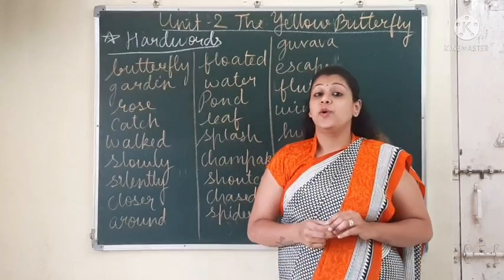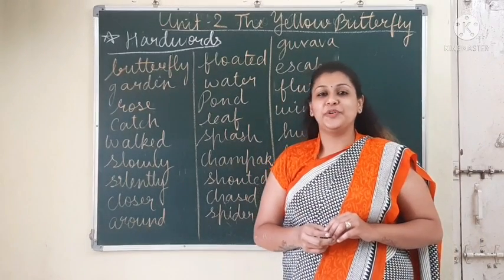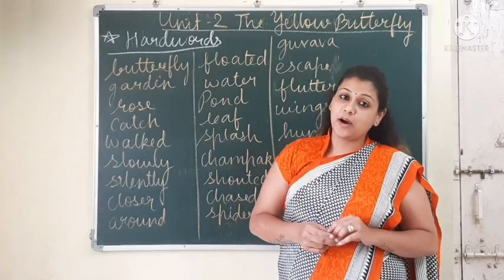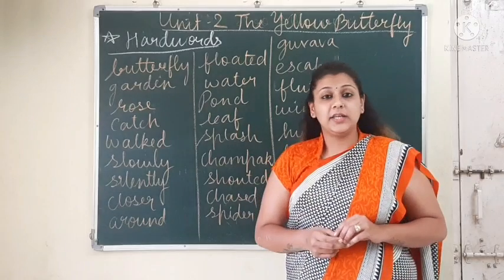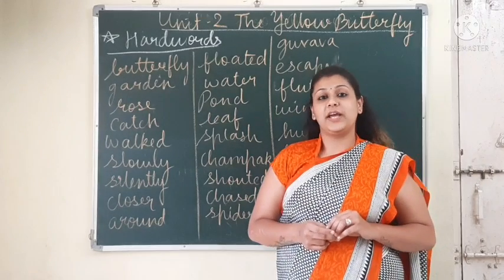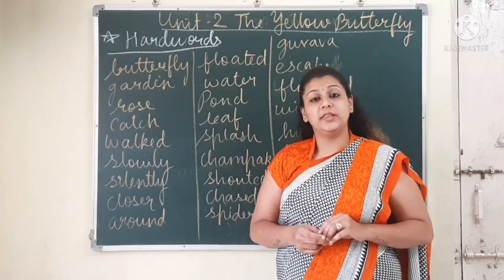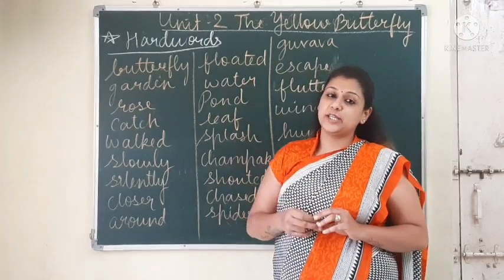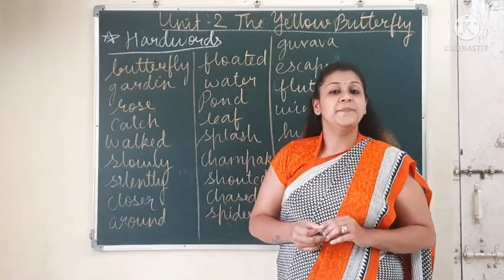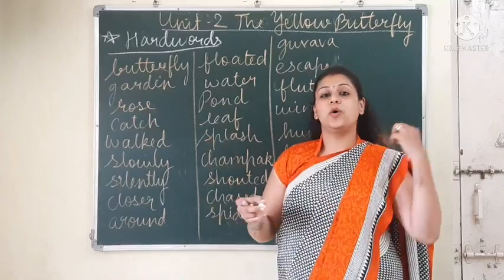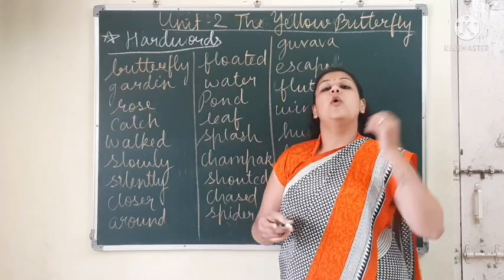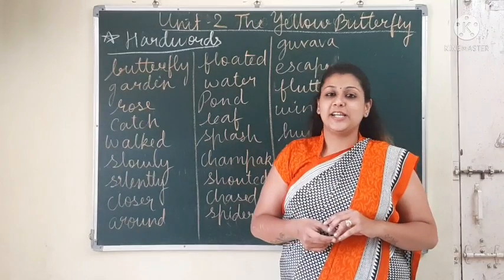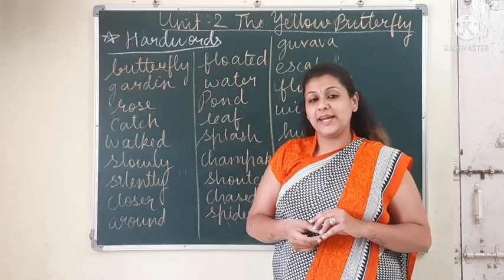In the online lecture we have learnt how beautiful the poem is. We saw the yellow butterfly — where it was, how it was flying in Sonu's garden, and how Sonu tried to catch it. We saw the whole poem on the video and the teacher explained it in the online lecture.